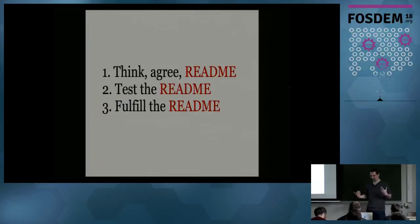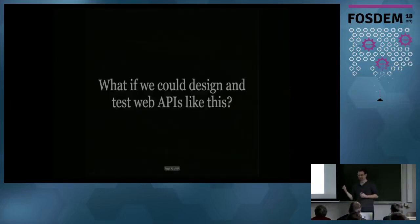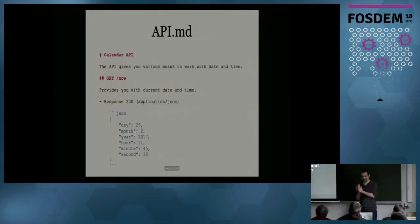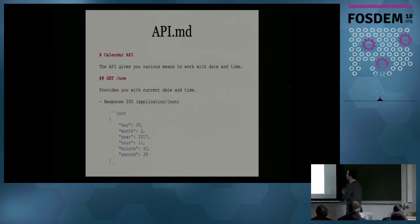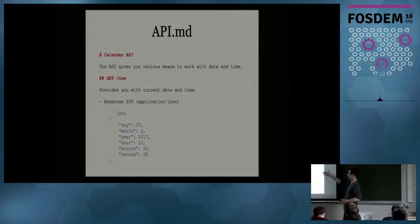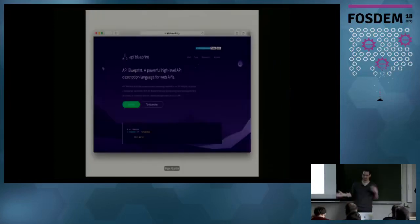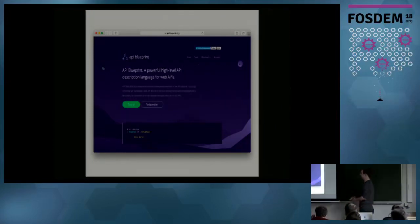So you think about the interface, you agree with everyone on it, you write it down as a README, then you set up the tests, and then you code until the implementation fits the promise. What if we could design and test web APIs like this? Imagine you have a README — with a name like API — and it has just a couple of sentences of how the API works, and you document a request and a response with examples. Would it work? Well, it works.